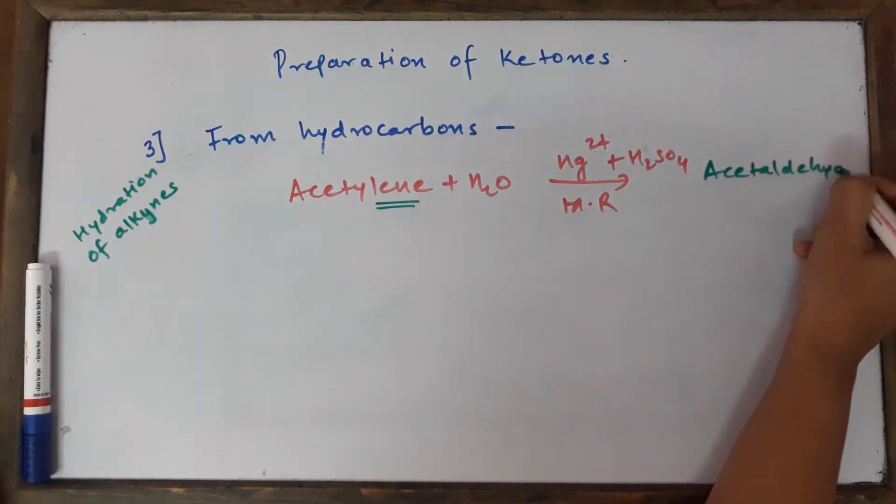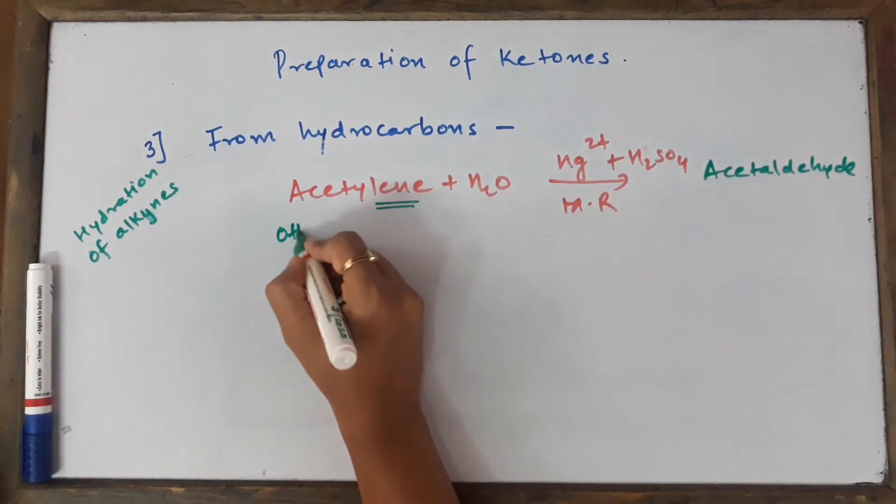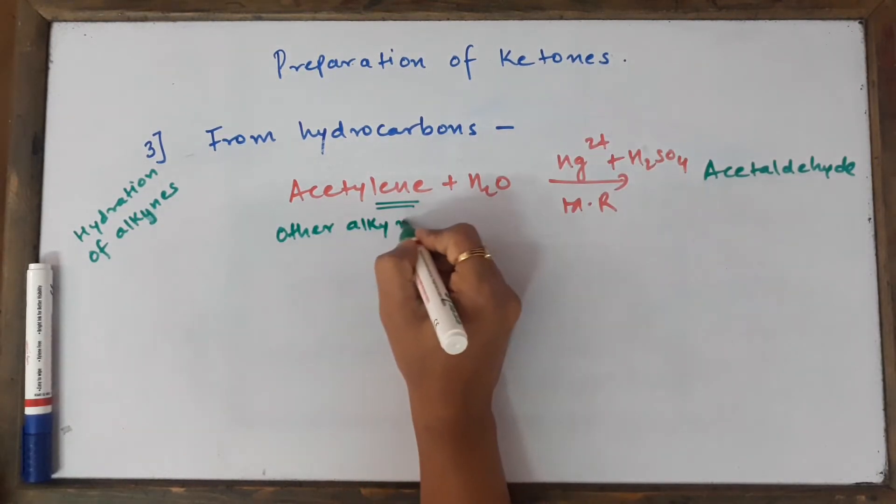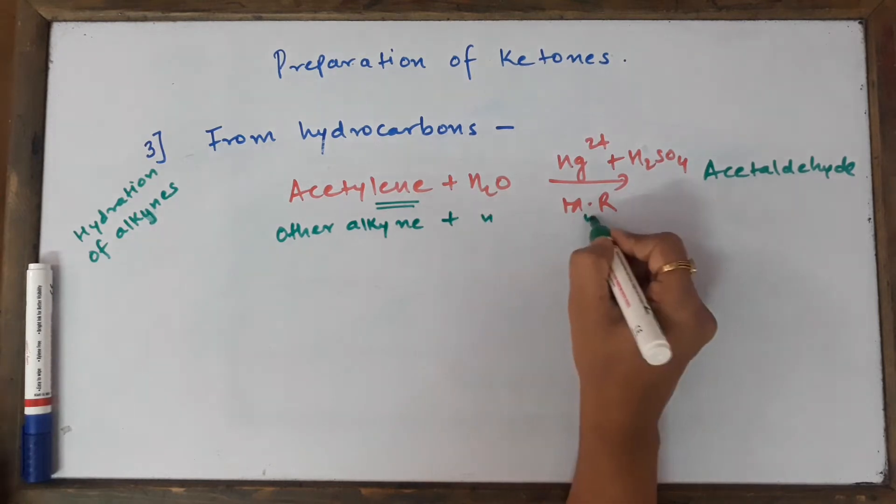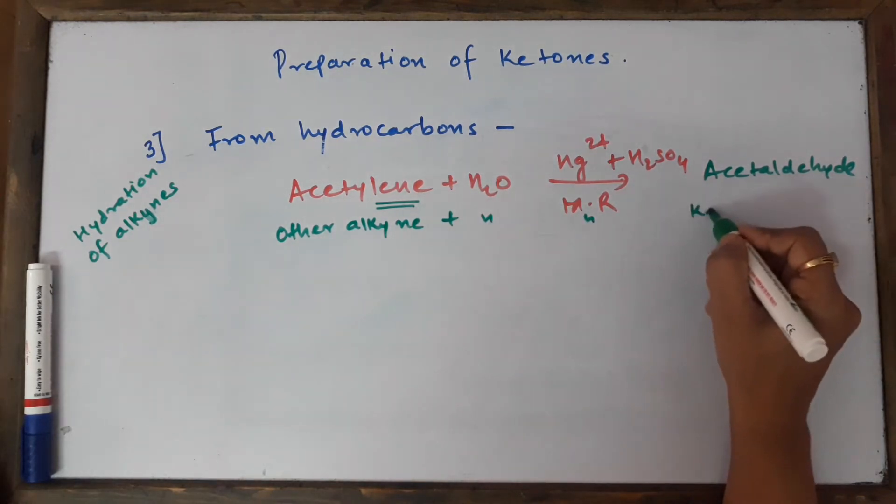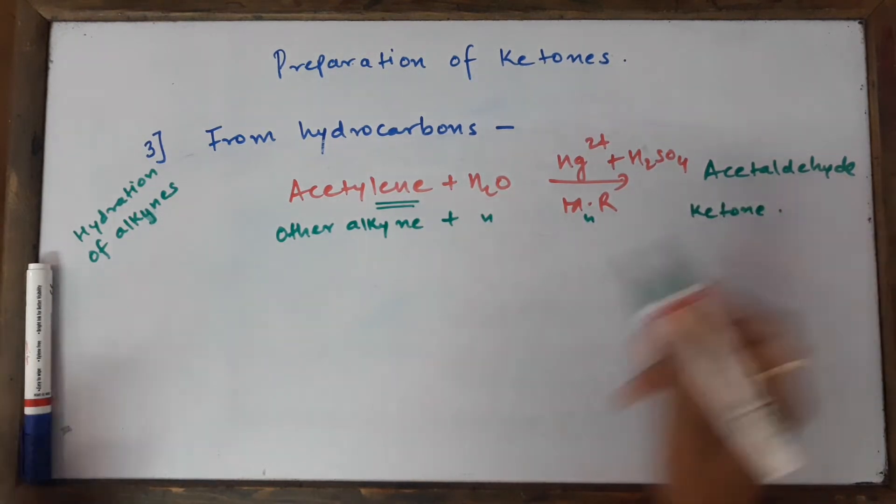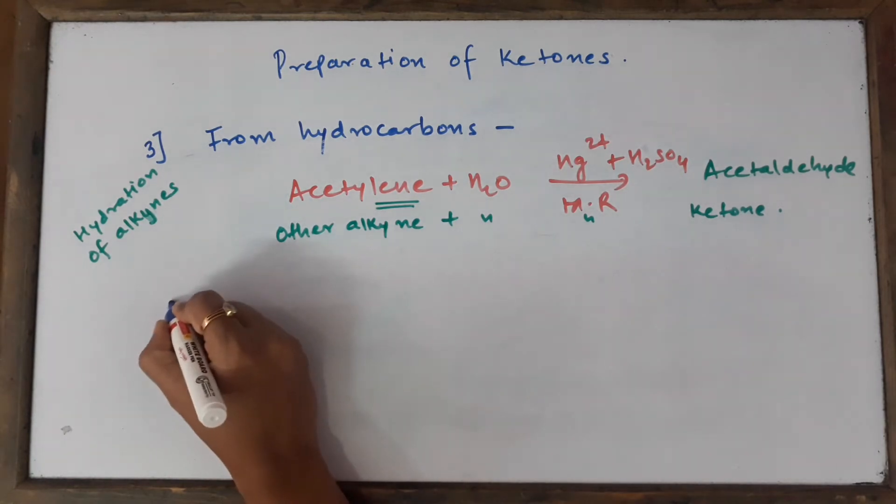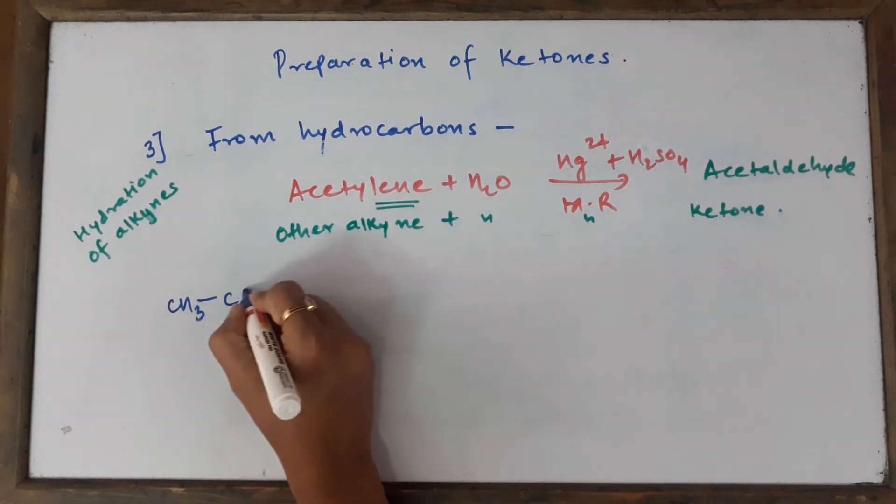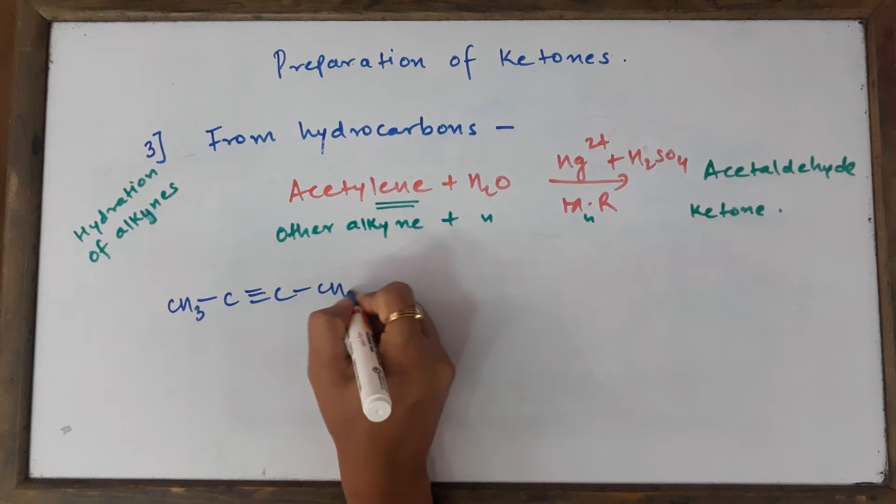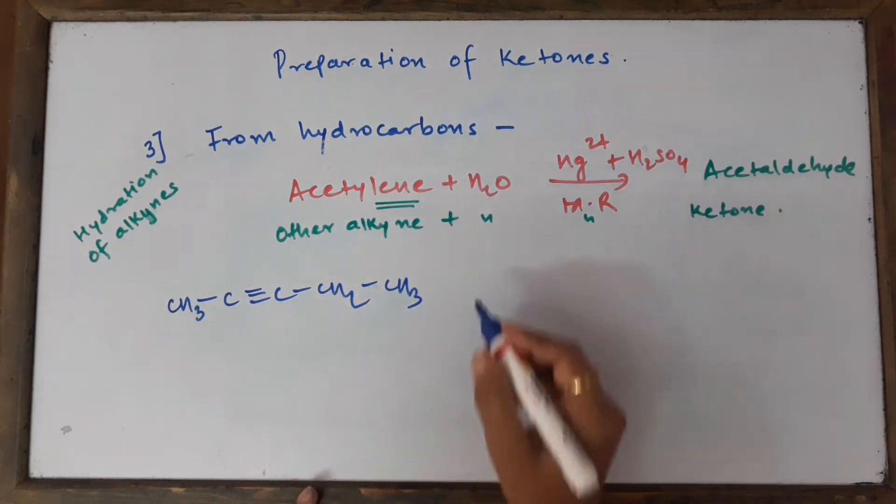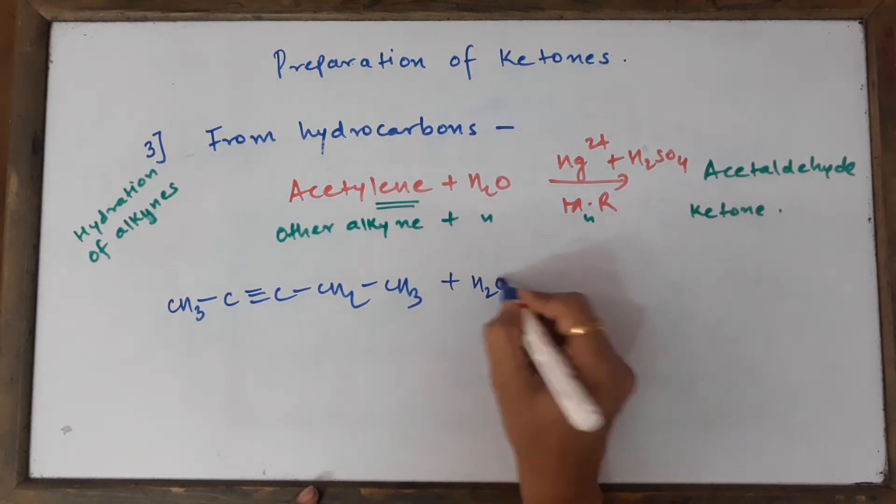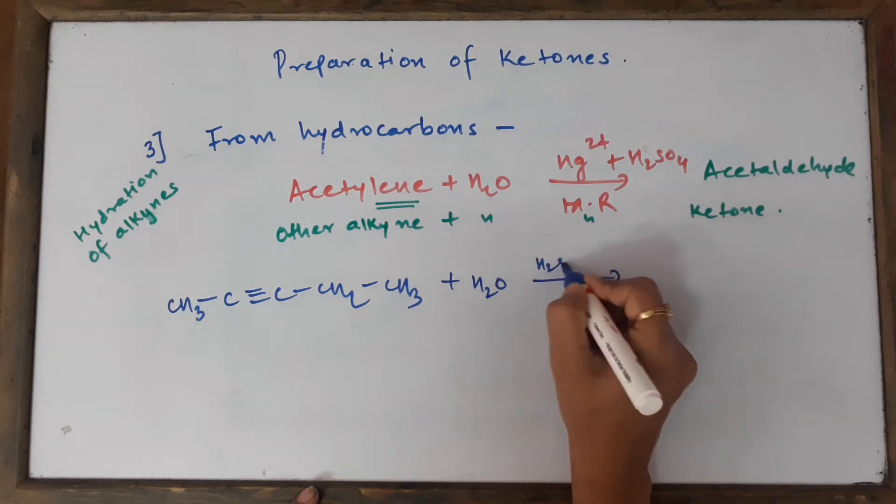If you start with a second alkyne or any other alkyne of choice and carry out the same procedure on it, you are going to get ketone. Let us see how it happens. It's very simple, just focus here. So we are going to get CH3-C≡C-CH2-CH3, for example I've taken this alkyne.